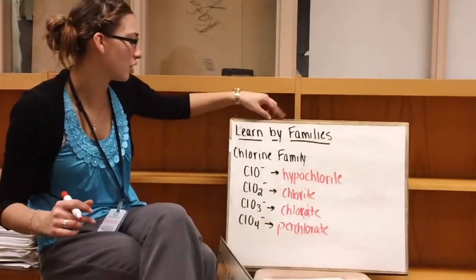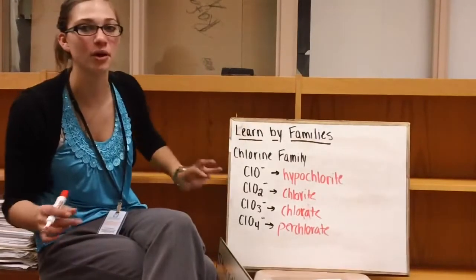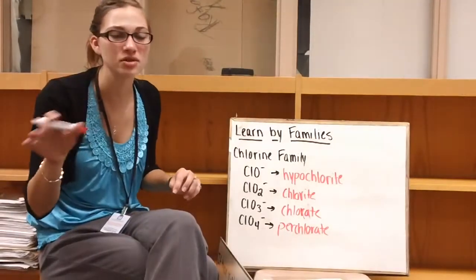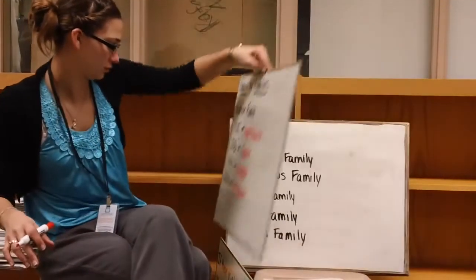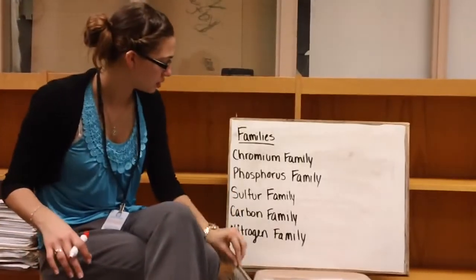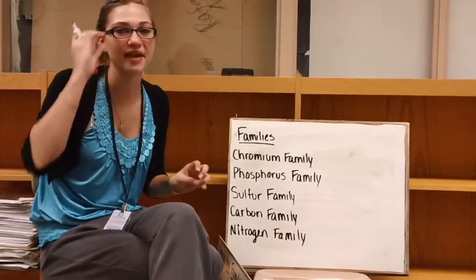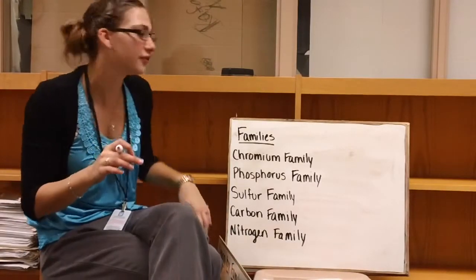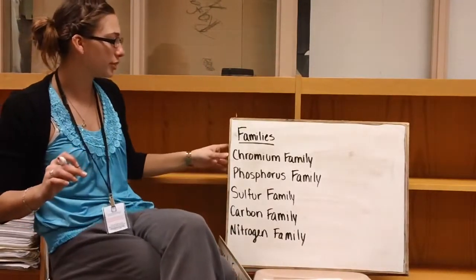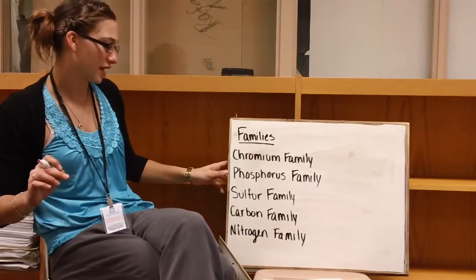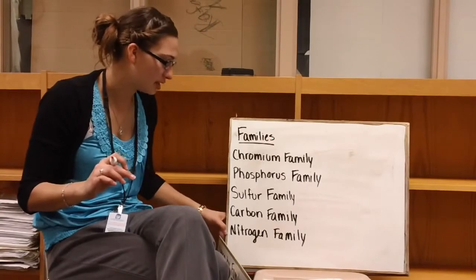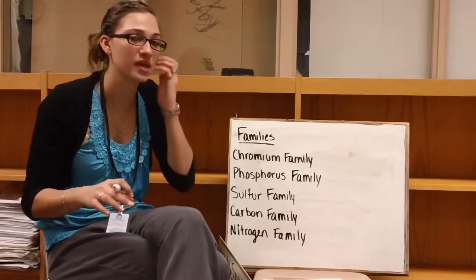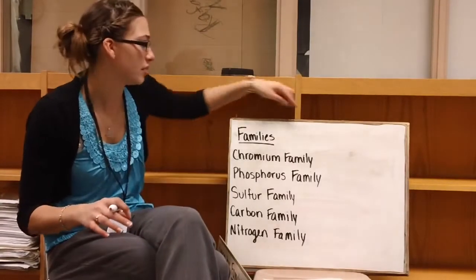So this is one of the only families that really has four different ones that you have to worry about. Most of them have two or three. So there's going to be six families total. Chlorine being the first one. And then you have your chromium family, your phosphorus family, your sulfur family, the carbon family, and the nitrogen family. You're responsible for all six of those, so make sure you learn them.